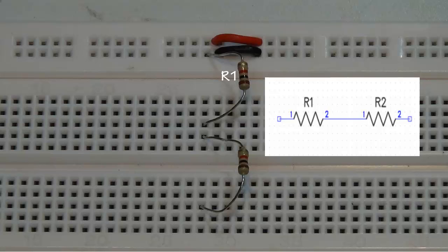Now our problem has been resolved on the project board. The common connection between R1 and R2 has been made in a group of five holes of which two are being used by the component leads.